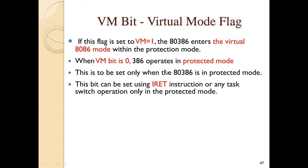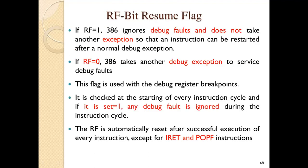The RF bit is the resume flag. If RF is equal to one, the 386 ignores debug faults and does not take any other exception, so that an instruction can be restarted after a normal debug exception. If RF is equal to zero, the 386 takes another debug exception to service the debug faults. This flag bit is used with debug register breakpoints; it is checked at the start of every instruction cycle, and if set to one, any debug fault is ignored during that instruction cycle.